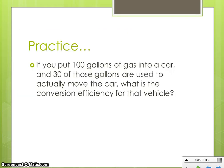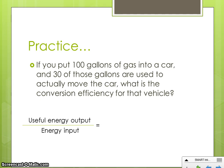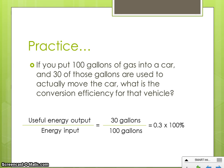Here's another example. You put 100 gallons of gas in your car, and 30 of those gallons are used to actually move the car. To calculate conversion efficiency, we use the equation: useful energy output over energy input. The useful gallons were 30, and the total energy input was 100 gallons. So 30 divided by 100 equals 0.3. To convert a decimal to a percentage, multiply by 100%, giving us 30%. So this car is 30% efficient, which is pretty typical for a car.